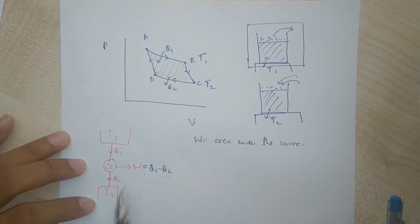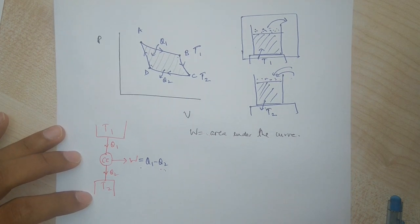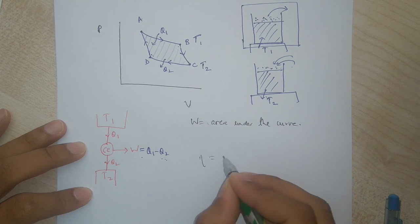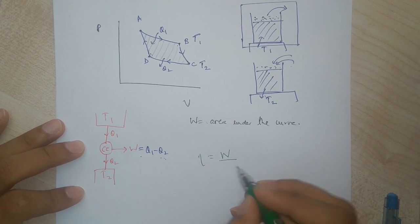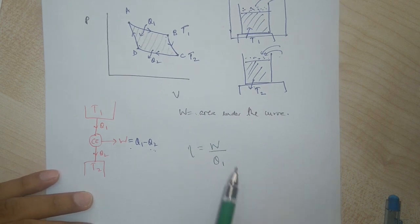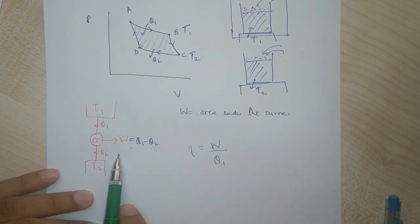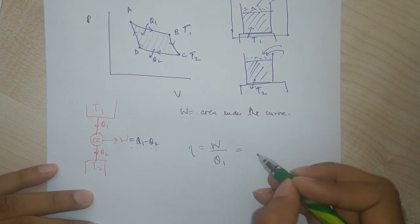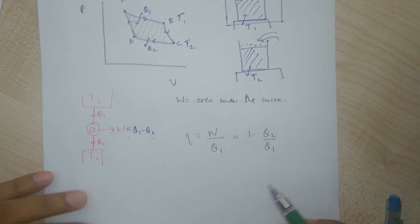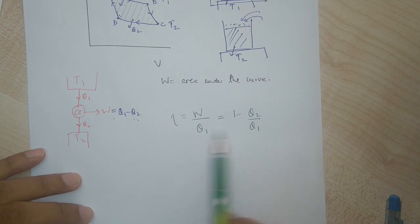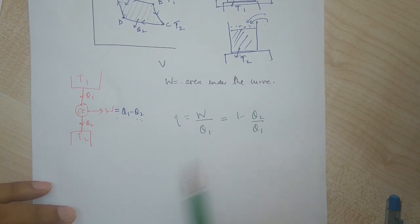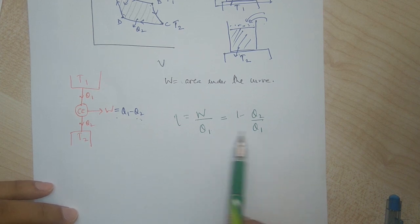We define for an engine something called its efficiency. Efficiency is defined as the work that we get divided by the amount of heat that we put in. Substituting for the work done from the Carnot engine, we get this as equal to 1 minus Q2 by Q1. This equation is true for any engine, whether it is a Carnot engine, petrol engine, diesel engine, or steam engine.